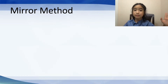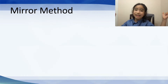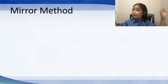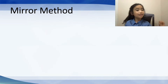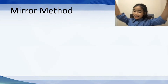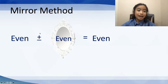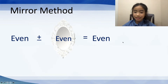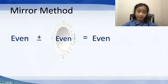The word 'same' here doesn't mean the two numbers are exactly the same — it means they are from the same group, like they are both odd or they are both even. For example, 12 was looking at the mirror and it saw 14 inside the mirror. 12 and 14 aren't exactly alike, but they come from the same group — they are both even. So the result is even. An even number looking at the mirror: if it sees an even number in the mirror, the result is even. So on the top, even plus even equals even, and on the bottom, even minus even equals even.